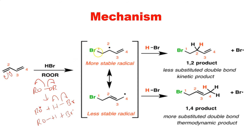Once bromine gets attached at carbon number one, a free radical forms at carbon number two because the bond was cleaved homolytically. One of the electrons from this double bond shifts towards carbon number two, and then the double bond between carbon three and four cleaves homolytically, giving one electron towards carbon two-three to form a double bond and one electron goes to carbon number four. So we can see a free radical forms, and considering stability, this free radical is more stable because it is secondary.